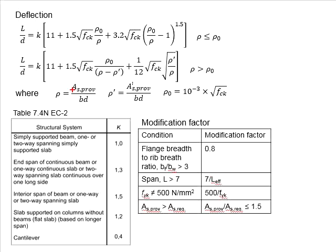For you to calculate the deflection, you need to first determine the rho, which is the As provided divided by cross-sectional area of the member. It is then checked against the rho_0. If the rho is less or equal to rho_0, these equations will be used. Otherwise, you may use this equation.